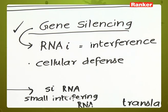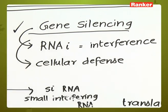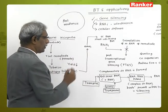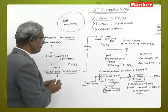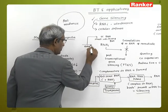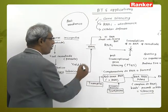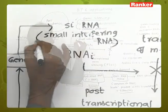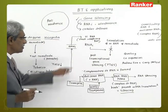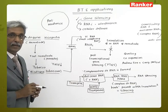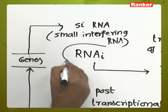RNAi is a method of cellular defense against the nematode. In Nicotiana tabacum, the DNA contains genes that can produce small interfering RNA, also termed as siRNA or RNAi.